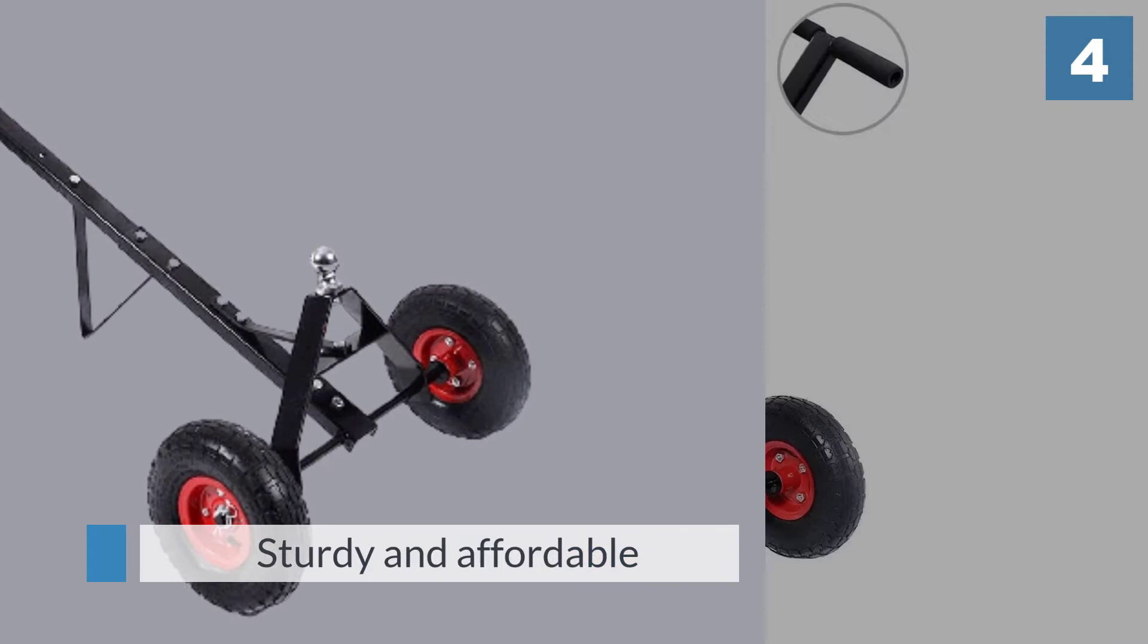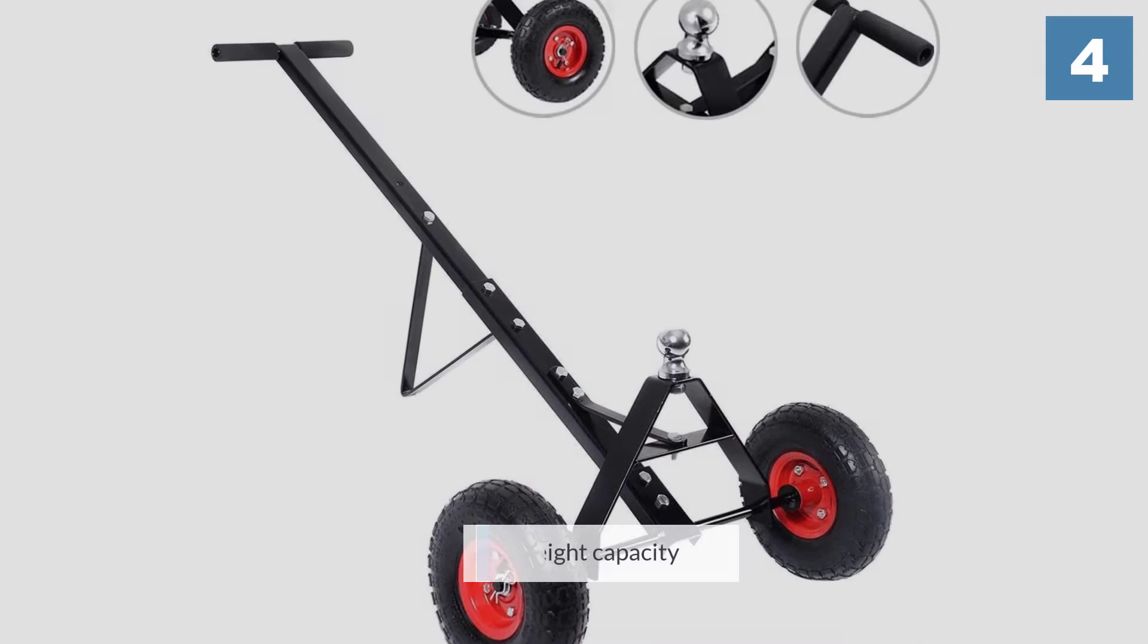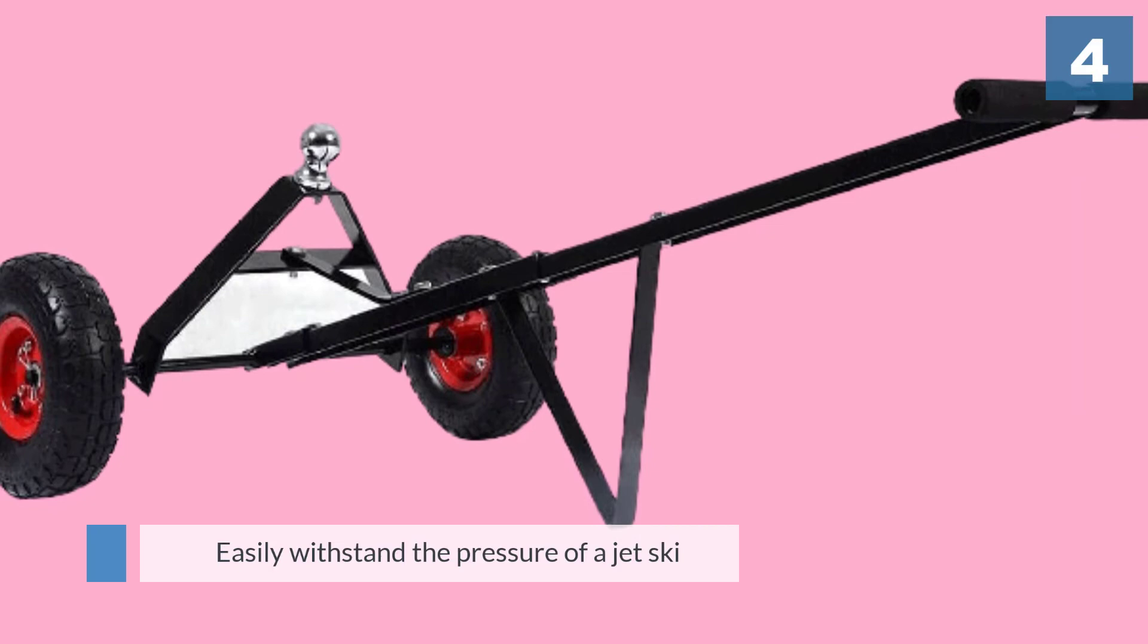But we recommend the buyer beware with this trailer dolly. Giant X promotes this trailer as having a 660 pounds weight capacity. This trailer dolly could easily withstand the pressure of a jet ski or a smaller camper.